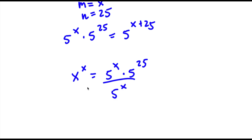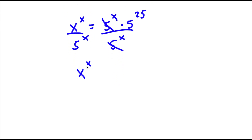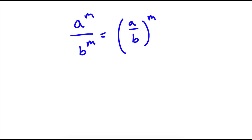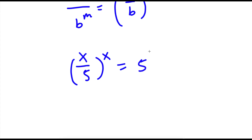Now if I divide both sides by 5 to the power of x, these two cancel out, and I have x to the power of x over 5 to the power of x is equal to 5 to the power of 25. Now if I have something in the form a to the power of m over b to the power of m, this equals a over b to the power of m. So x to the power of x over 5 to the power of x equals x over 5 to the power of x, which equals 5 to the power of 25.